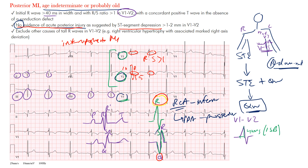You also want to exclude other causes of tall R waves in V1 and V2. Right ventricular hypertrophy is a diagnosis of exclusion, but notice there's no right axis deviation — the QRS axis here was about 3 degrees, within normal limits. If you saw right axis deviation you might want to rethink the diagnosis. In this case, the patient had a previous inferoposterior MI, and those R waves represent Q waves in the right precordial leads indicating posterior involvement.